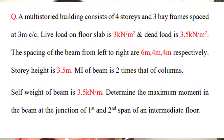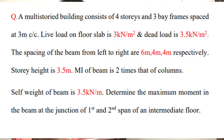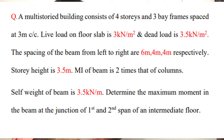We have a multi-story building consisting of 4 stories and 3 bay frames spaced at 3 meter center to center. The live load on the floor slab is 3 kN/m² and the dead load is 3.5 kN/m². The spacing of beams from left to right are 6 m, 4 m, and 4 m. The story height is 3.5 m. The moment of inertia of the beam is 2 times that of the column. Self-weight of the beam is 3.5 kN/m. Determine the maximum bending moment in the beam at the junction of the first and second span of an intermediate floor.